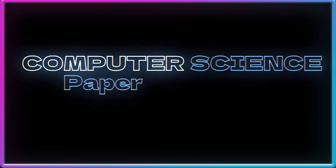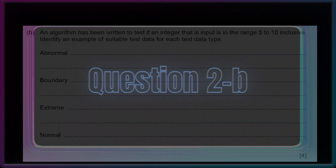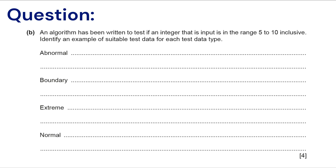Hi guys, welcome to this video. Today we are going to solve question 2 part b of the 0478/22 February/March 2024 past paper. The question is: an algorithm has been written to test if an integer that is input is in the range 5 to 10 inclusive. Identify an example of suitable test data for each test data type.